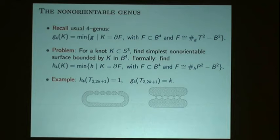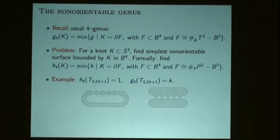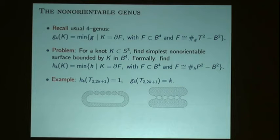Here's one example to illustrate what the problem is about. I drew the two-five torus knot, and on the left you see that knot bounding a Möbius band. On the right is an orientable surface bounded by the knot, and that surface has genus two. It does turn out that the smallest genus you can bound in the four-ball for that knot is genus two, but obviously it bounds a Möbius band.